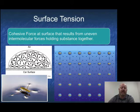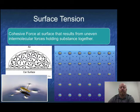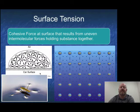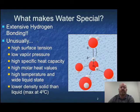Surface tension allows water bugs to run on top of the water. It's also the reason water beads up on nice waxed car surfaces, and why water droplets fall in spherical shapes — because that surface tension pulls everything nice and tight together within that surface.